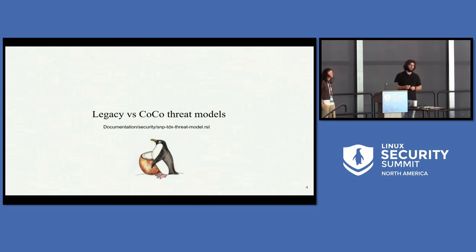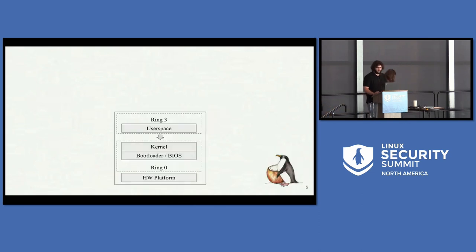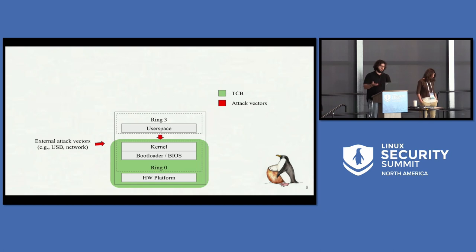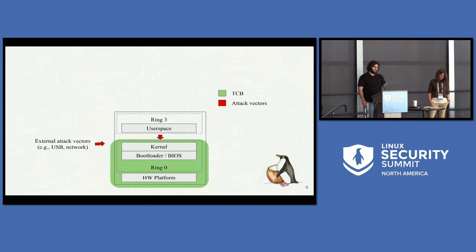Before we delve into the details of how the confidential computing threat model works in the Linux kernel, let's compare it with the legacy or conventional threat model we're all used to. In a classic case of Linux running on x86, you have user space in Ring 3 and the kernel, bootloader, and BIOS in Ring 0, below the hardware. From a security point of view, we trust the kernel, the bootloader, the BIOS, and the hardware — that's the TCB. All the places where we interact with entities we don't trust are potential attack vectors. Everyone is familiar with the risk of user space, which is why we sanitize copy-to-user and copy-from-user. There are also external attack vectors: USB, network, Bluetooth, Thunderbolt.